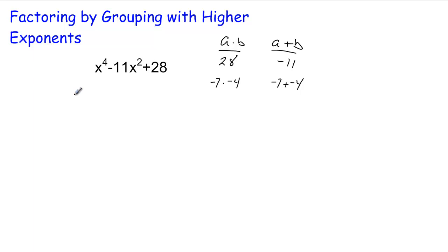So then, as in previous examples, you break this up: x to the fourth minus 7x squared this time. Whatever exponent is here, be sure you put here, or this will not factor correctly.